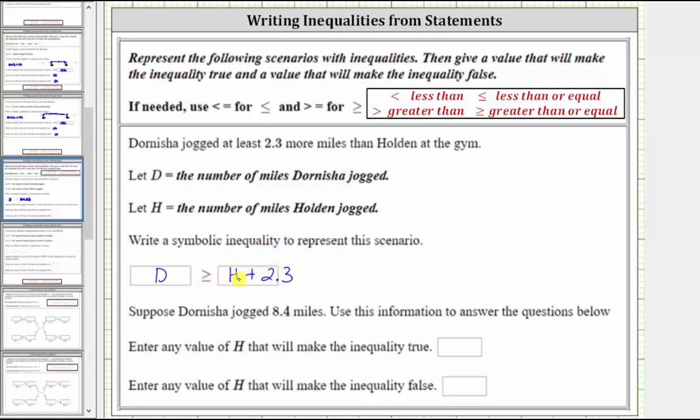However many miles Holden jogged, Dornisha jogged at least 2.3 more miles. Now for the second part of the question, suppose Dornisha jogged 8.4 miles. Use this information to answer the questions below.